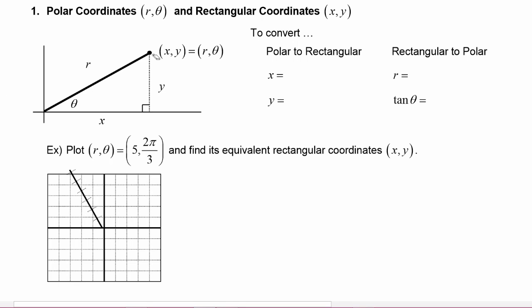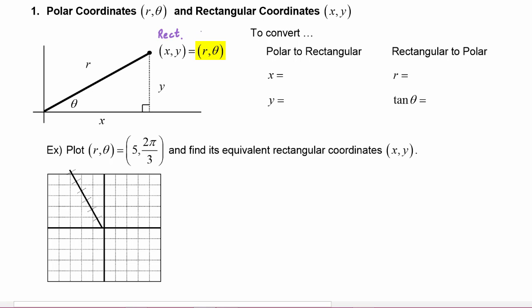In this diagram, we have a point whose coordinates would be x comma y — those are the rectangular coordinates you have been familiar with for many years. The horizontal distance is x, the vertical distance is y, and that's what gets you to the point (x, y). We can also label that point using what are called its polar coordinates of r comma theta.